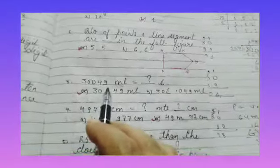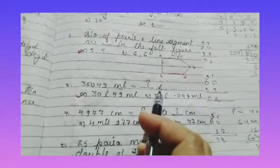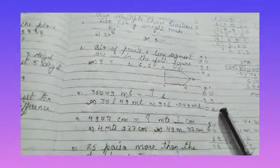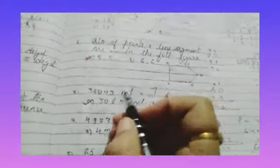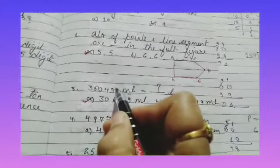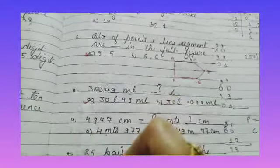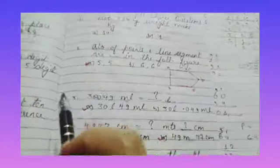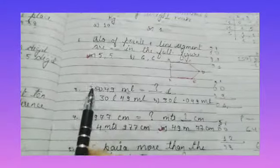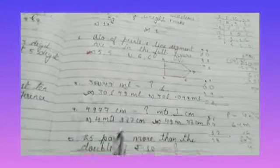30,049 ml is equal to dash litre. So 1000 ml makes 1 litre. So it will be 1, 2, 3. After 3 digits there will be a decimal point. So this means that 30 litre and 49 millilitre. This is your answer.